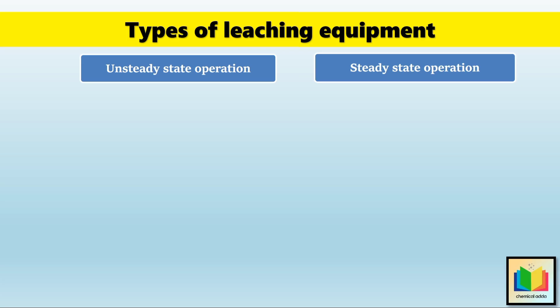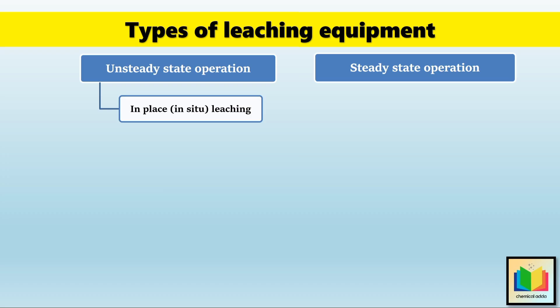Let's look at some common types of unsteady state leaching. The first is in-place leaching, also called in-situ leaching, where the solvent is injected underground to dissolve valuable minerals — that is, the solvent is injected directly into underground ore deposits to dissolve the desired material. The next type is heap leaching, where the solvent is sprayed over a heap of crushed ore. The crushed ore is piled into heaps and the solvent is sprayed over it to dissolve the target substance.